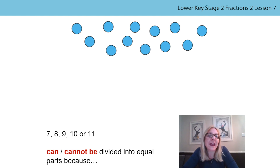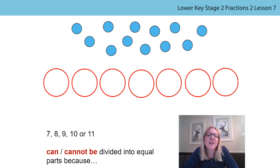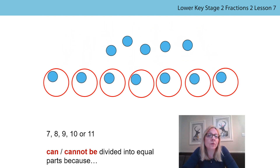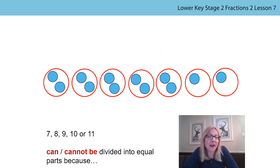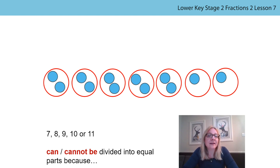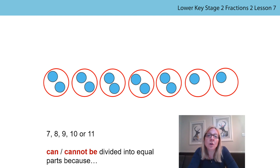Can we divide twelve into seven, eight, nine, ten or eleven equal parts? To help you explain this, you could use the sentence starter on the screen. Seven cannot be divided into equal parts because the parts would be unequal. Five of the parts would have two counters and two of the parts would have only one counter. The whole which is twelve cannot be divided into seven equal parts because seven is not a factor of twelve. How about eight, nine, ten or eleven? Pause the video and have a think or try it out. Twelve cannot be divided into eight, nine, ten or eleven equal parts because they are not factors of twelve.